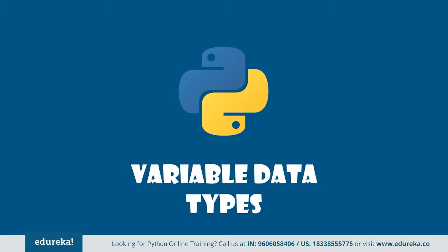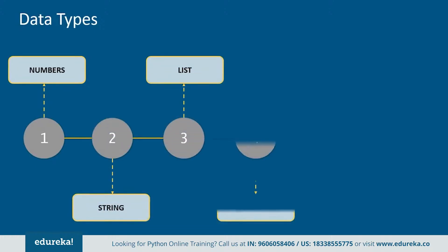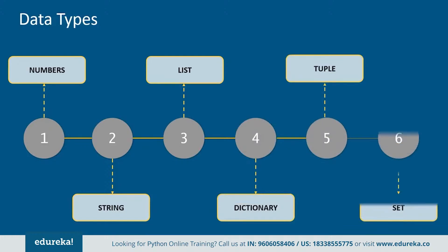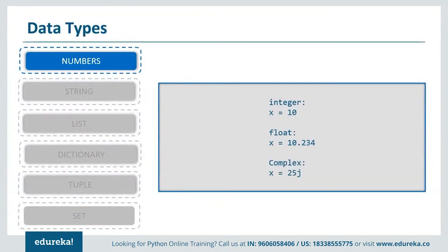Now let's look at the various data types in Python. There are mainly six: numbers, string, list, dictionary, tuple, and set. There is also range, which we'll discuss at the end as it is mainly used when iterating or using for loops. For numbers, we have four sub-types: integer, float, complex, and boolean. Integer takes whole number values, float includes decimal points, complex uses J as the imaginary part, and boolean returns only True or False.